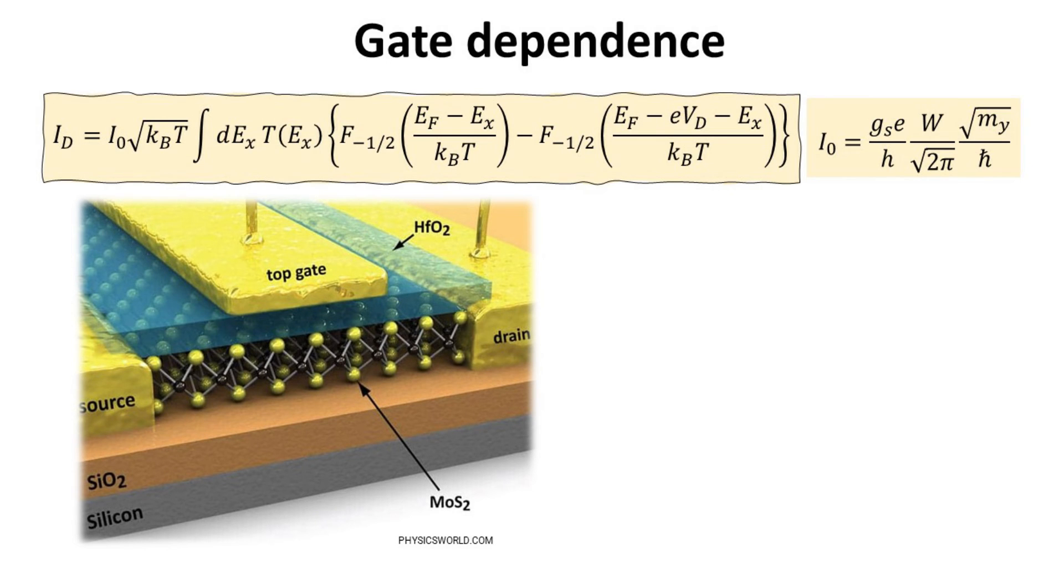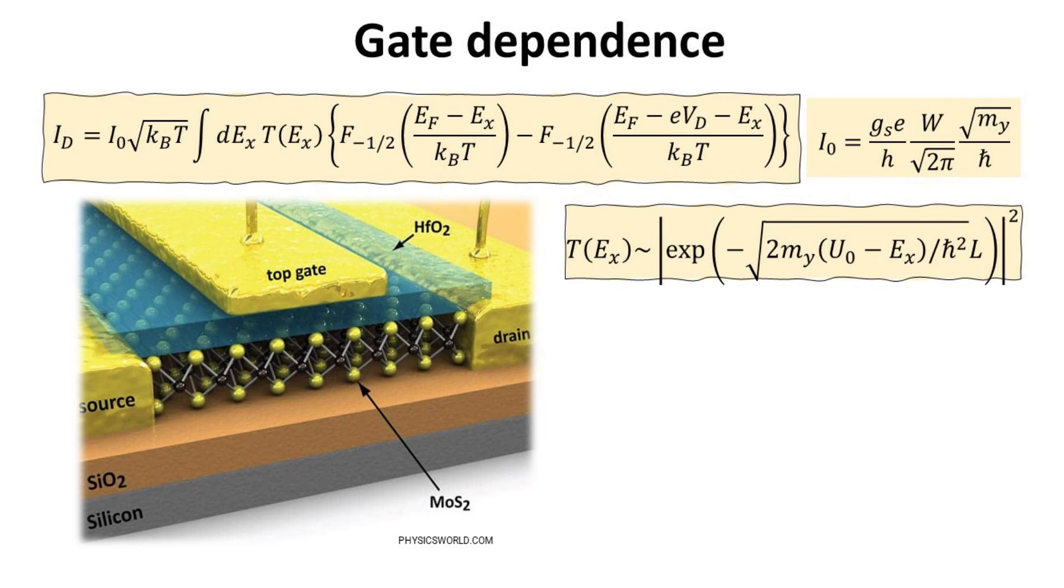Recall that we derived this for a transistor with two-dimensional electron gas, such as the case is illustrated. Here, the transmission function can be approximated by the WKB tunneling formula for a rectangular barrier, where U0 is the energy of the channel barrier and L is the length of the barrier. U0 is controlled by the gate voltage, and its explicit dependence can also be worked out if the device geometry is given. This current can be solved numerically, and the MATLAB script for it is in the description section.